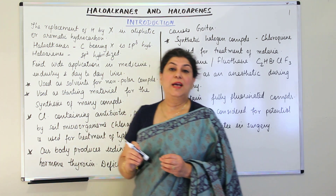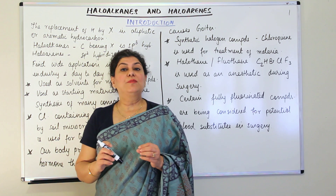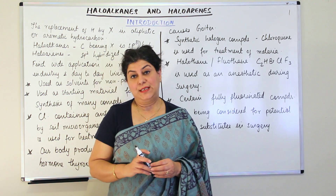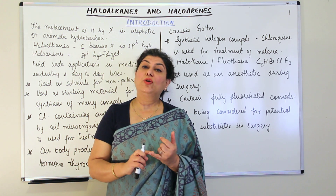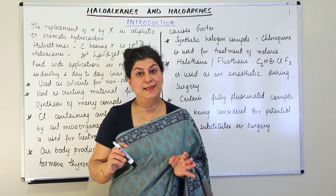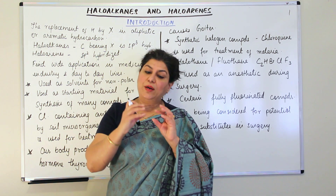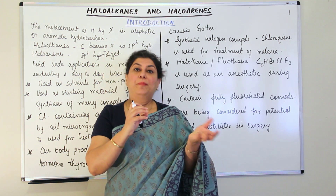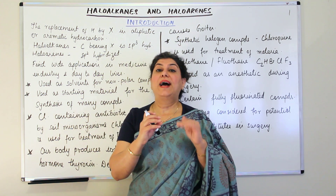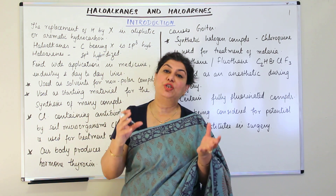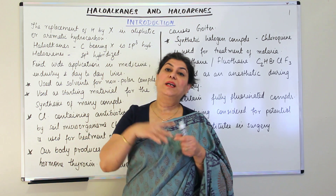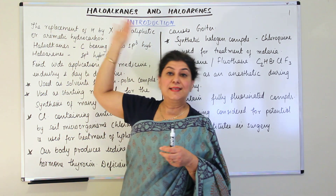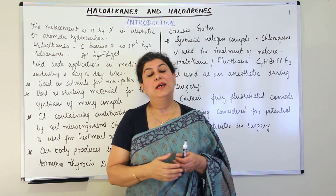Now what are these halogen atoms? Halogen atoms are the elements of group 17 of the periodic table. They are fluorine, chlorine, bromine, iodine, and astatine. So whenever one of the hydrogens of a hydrocarbon is replaced by a halogen atom, we call it a halogen-substituted hydrocarbon, and you can classify them mainly into two categories: haloalkanes and haloarenes.